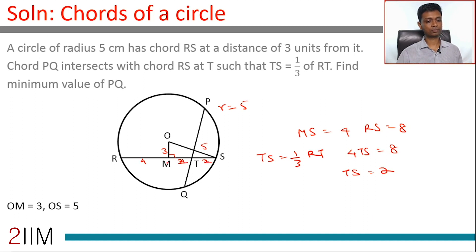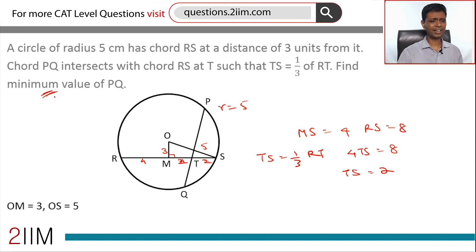Now we need to find the minimum value of PQ. There's something interesting here - you're asking for the minimum value of PQ because passing through T we can draw a number of chords. We can draw PQ in many different ways.